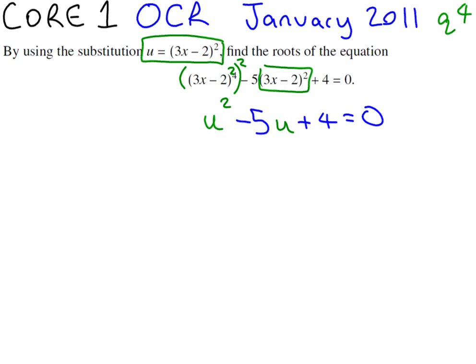So we've got ourselves a quadratic. Now if you think you can factorize this quadratic into u minus 1, u minus 4, which means that the solutions are going to be u equals 1 or u equals 4.